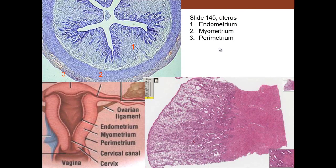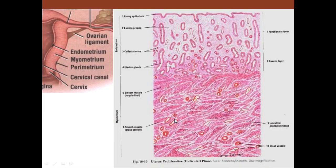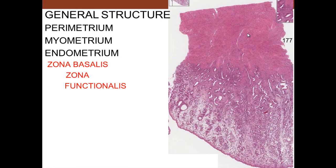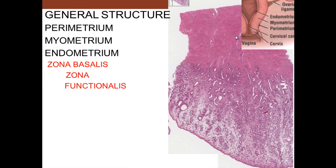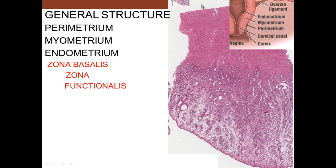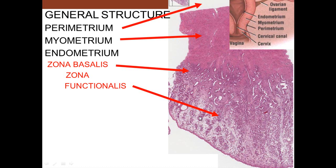In the uterus we see the myometrium, the endometrium, and the perimetrium. Looking at the endometrium, there is a functional layer on top and then the basal layer below, which touches the myometrium. The basal layer is pretty much stable throughout the menstrual cycle, while the functional layer is the layer that changes.